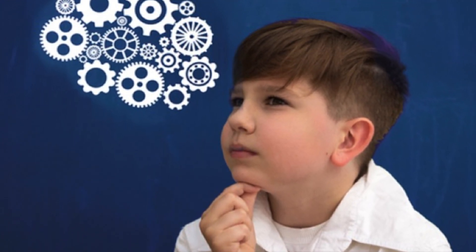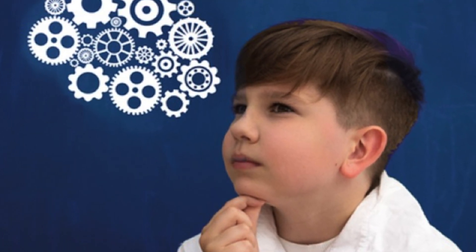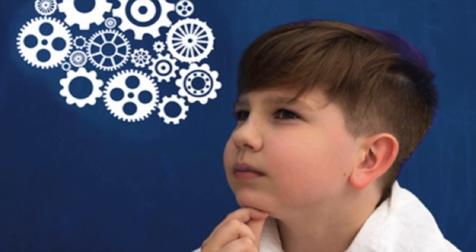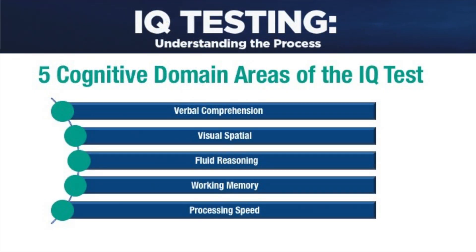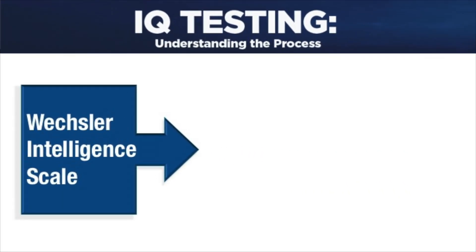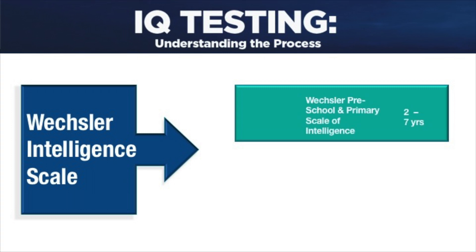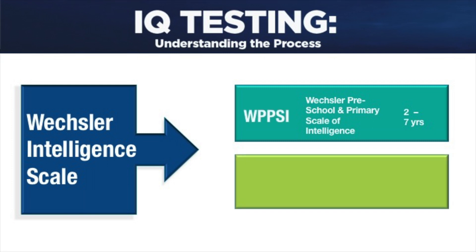For the purpose of IQ testing as it relates to this presentation and SAA admissions criteria, I will be discussing the five main cognitive or thinking domain areas that make up the most widely used IQ test. The most common and extensively used IQ test is called the Wechsler Scale. The Wechsler Preschool and Primary Scale of Intelligence, also referred to as the WPPSI, is used for children ages 2 through 7. The Wechsler Intelligence Scale for Children, also known as the WISC, is administered to students between the ages of 6 and 16. Both versions of the Wechsler Scales are considered to be the gold standard in the field of education.